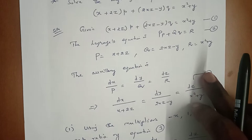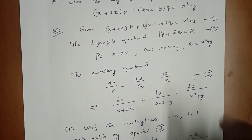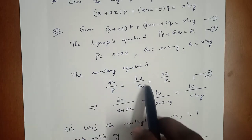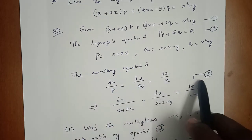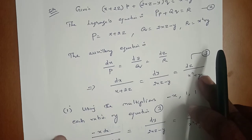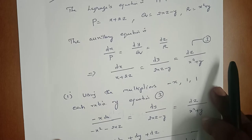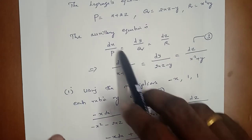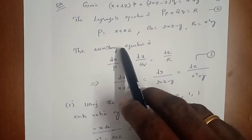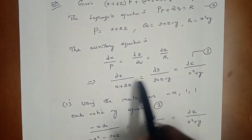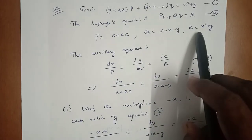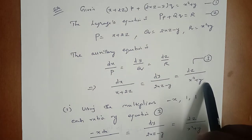The auxiliary equation of the Lagrange's equation is dx/P = dy/Q = dz/R, which is equation number 3. We have to find two solutions. For the first solution: dx/(x + 2z) = dy/(2xz - y) = dz/(x² + y).